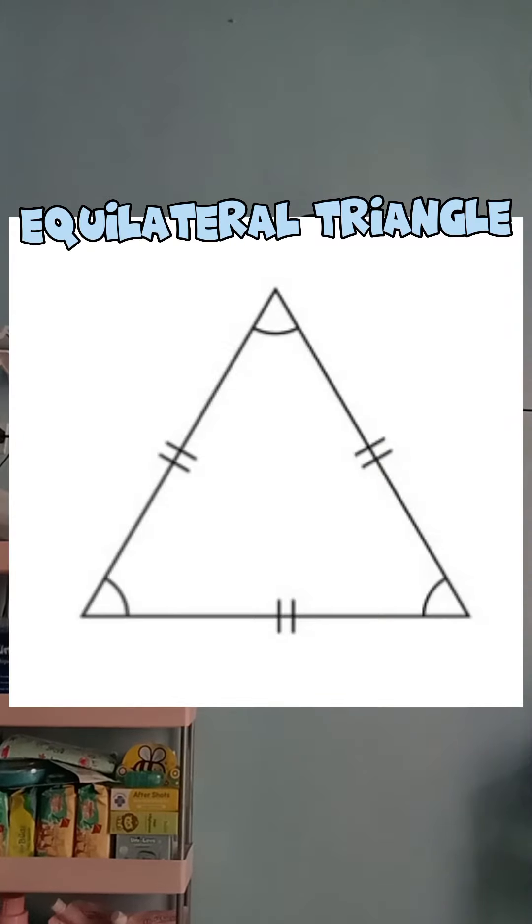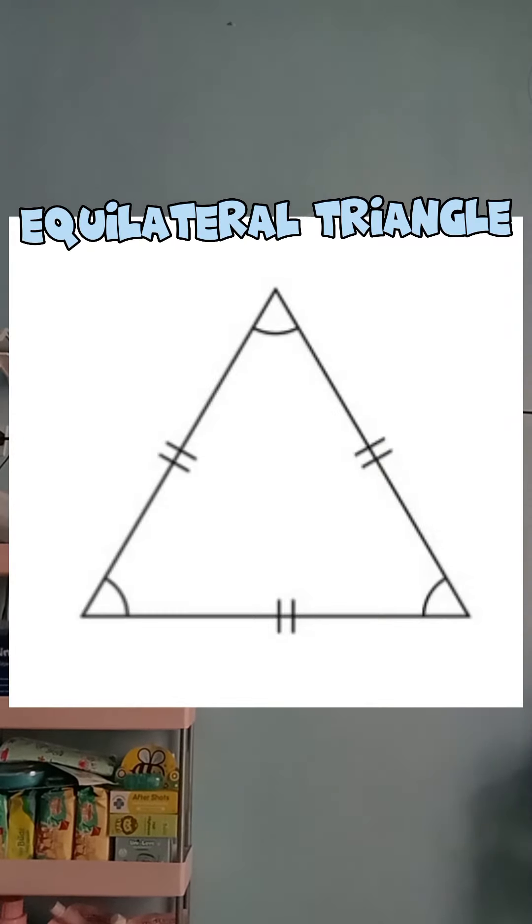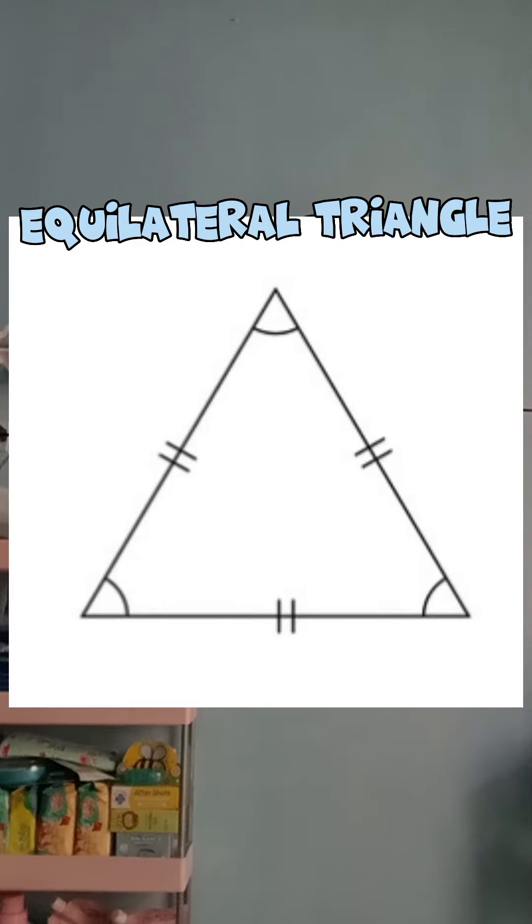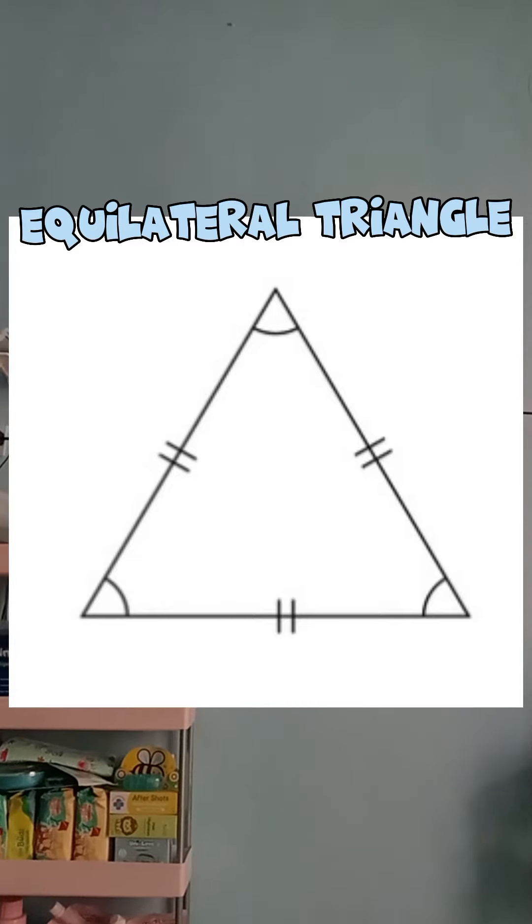An equilateral triangle is also known as a regular triangle because it is a regular polygon with three sides. It is also referred to as an equiangular triangle because all three internal angles are congruent to each other and are each 60 degrees.